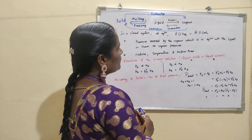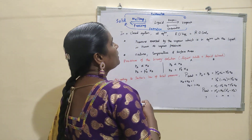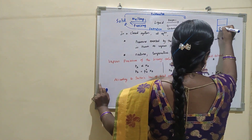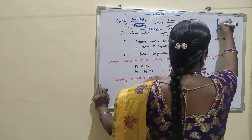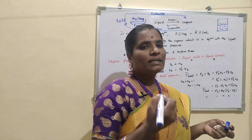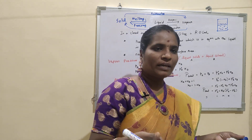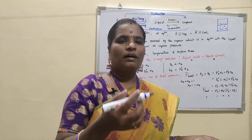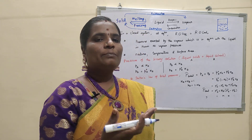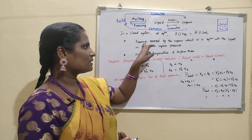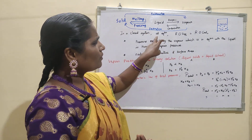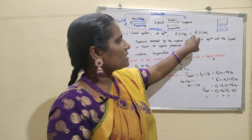For vapor pressure, we are only going to consider the liquid-to-vapor equilibrium. In a closed system, you have a liquid and water vapor above the surface of the liquid. At a particular stage, the water vapor is in equilibrium with the liquid. At that point, there exists a pressure exerted by the vapor which is in equilibrium with the liquid — that pressure is known as the vapor pressure. At this equilibrium, the rate of vaporization is equal to the rate of condensation.